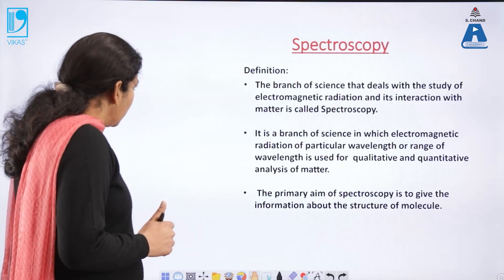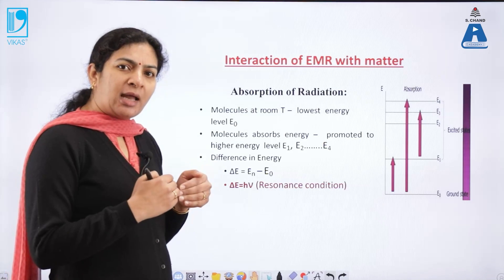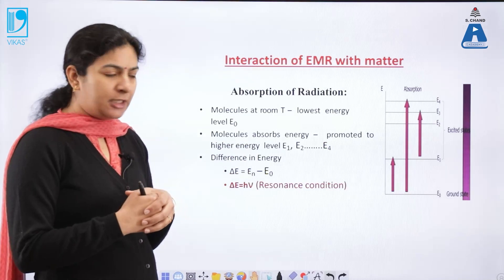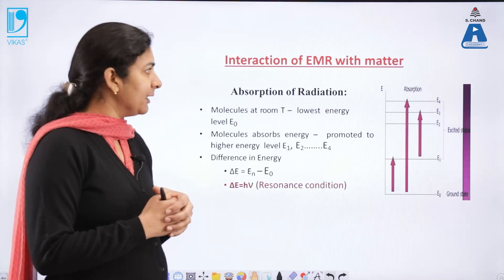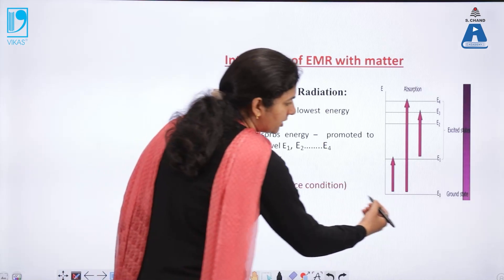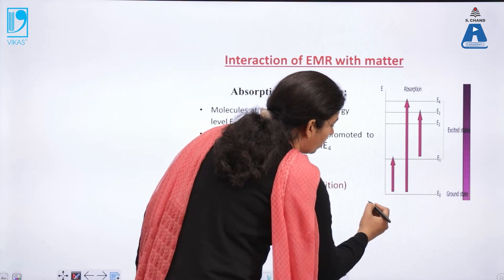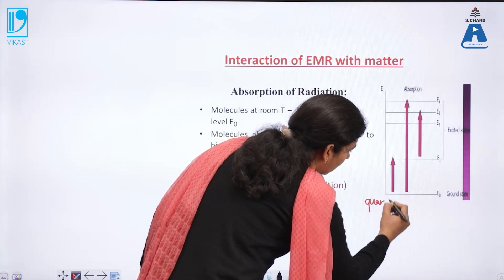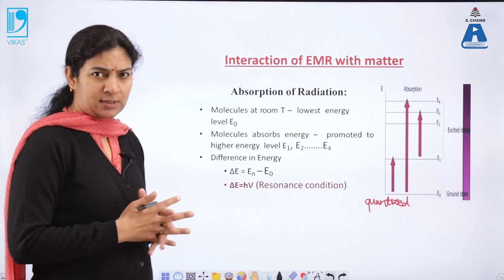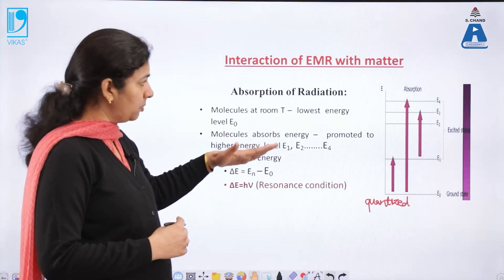So let us understand how these spectroscopic transitions take place — how does matter interact with electromagnetic radiation. In molecules and in atoms, these energy levels are very well defined, as we can see here. In terms of quantum mechanics, we can say that these are quantized energy levels. They are not continuous energy levels but they are quantized — they have a definite gap in between these levels.